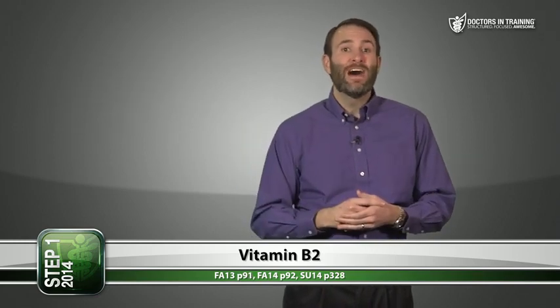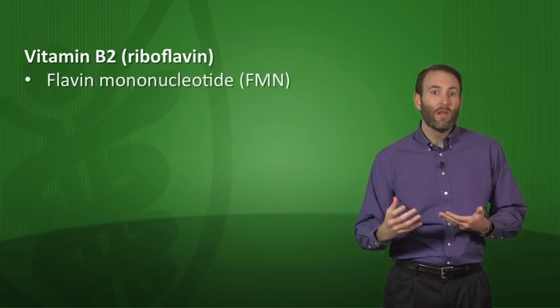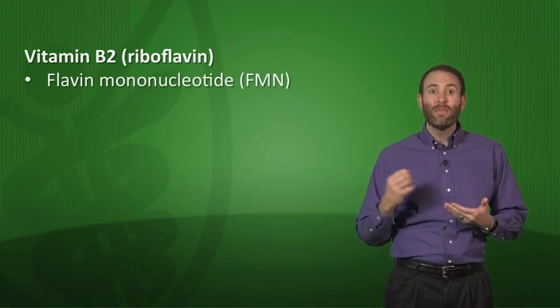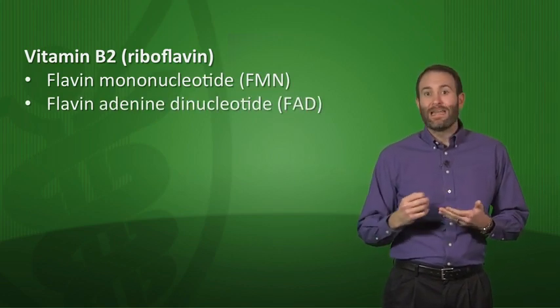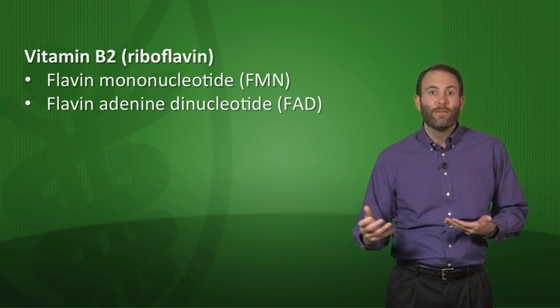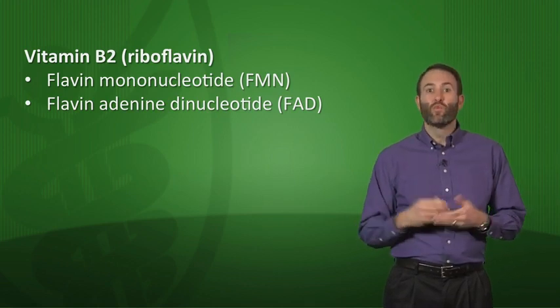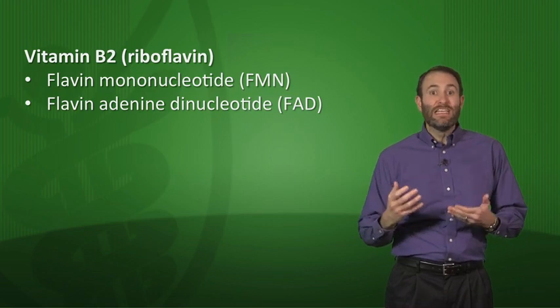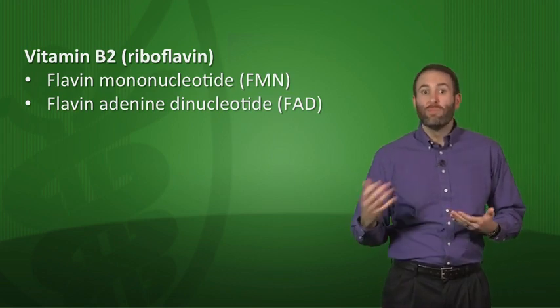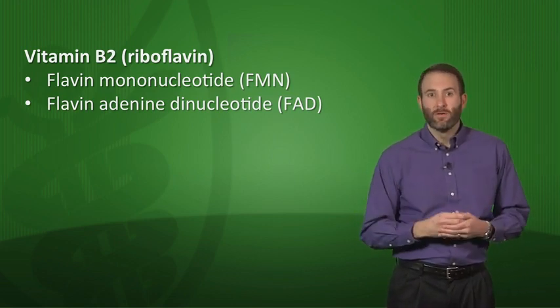Moving on to vitamin B2, also known as riboflavin. There are two biologically active forms: flavin mononucleotide (FMN) and flavin adenine dinucleotide (FAD). Both are cofactors for redox reactions. If an enzyme has the word 'dehydrogenase' in it, then it requires B2 as a cofactor.